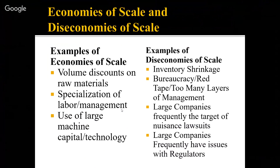Dividing up labor and management makes the job easier to do. Really small businesses don't have that capability — the owner does everything. As businesses get larger, the owner can't wear that many hats. For diseconomies of scale: big companies like Walmart and Target set aside money every year to settle nuisance lawsuits — slip and fall cases where it's sometimes cheaper to settle than to fight, which is kind of crazy. Smaller businesses are less likely to get sued this way.